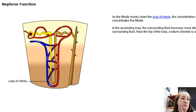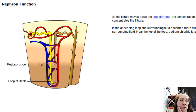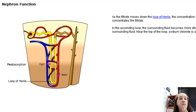As filtrate moves down the loop of Henle, the concentration of solutes increases in the interstitial fluid surrounding the tubule. Since this portion is permeable to water, water leaves by osmosis and is reabsorbed into the blood — concentrating the filtrate. In the ascending loop, the surrounding fluid becomes more dilute. This portion is impermeable to water but not sodium chloride, so sodium chloride diffuses out, lowering the filtrate's solute concentration. Near the top of the loop, sodium chloride is actively transported out, further diluting the filtrate.